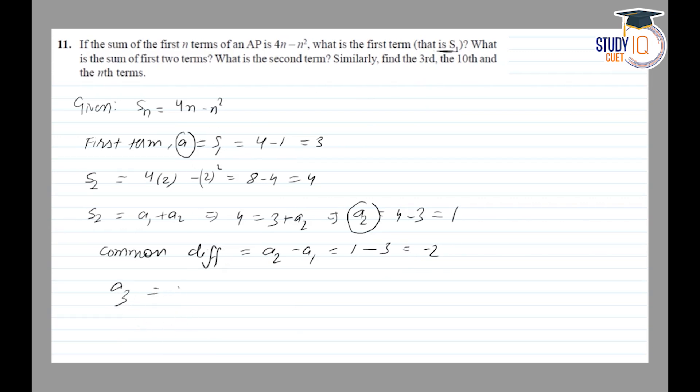a3 is 3 plus 2 into minus 2, so this is 3 minus 4, which is minus 1.